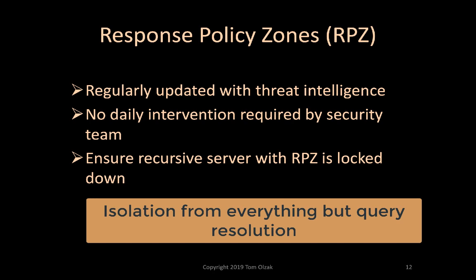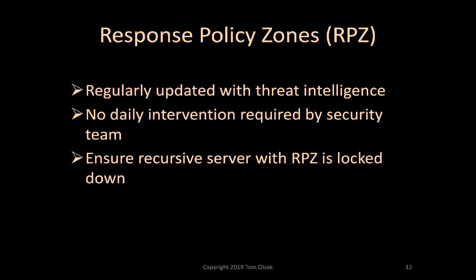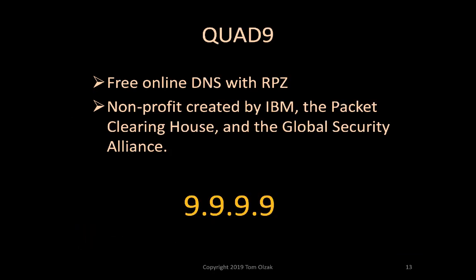To ensure the recursive server DNS firewall remains effective, the recursive server must be solidly locked down and isolated from the internet. Quad9 is a free online DNS service that uses RPZ. It is provided by a non-profit organization supported by IBM, the Packet Clearinghouse, and the Global Cyber Alliance. Simply directing your DNS resolution queries to 9.9.9.9 provides immediate RPZ protection.